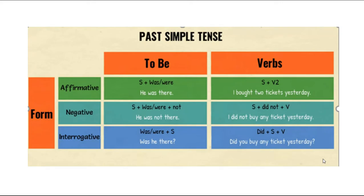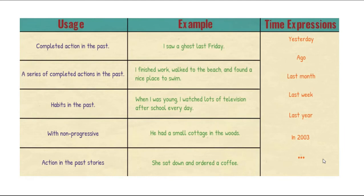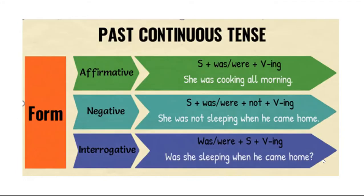Past simple tense — affirmative, negative, interrogative. Usage: completed actions in the past — 'I saw a ghost last Friday.' A series of completed actions in the past — 'I finished work, walked to the beach and found a nice place to swim.' Habits in the past — 'I watched lots of television after school every day.' With non-progressive verbs — 'He had a small cut in his boots.' In past stories — 'She sat down and ordered a coffee.' Time expressions: yesterday, ago, last month, last week, last year, in 2003.